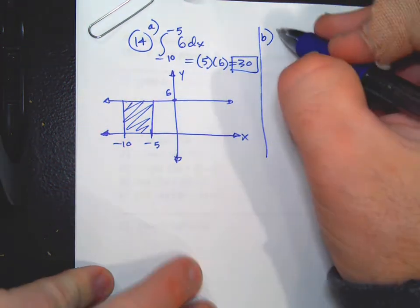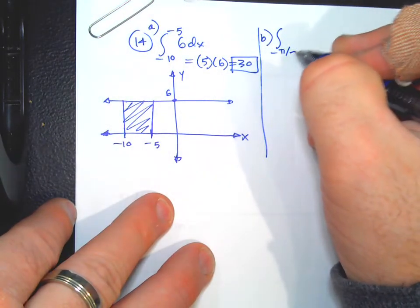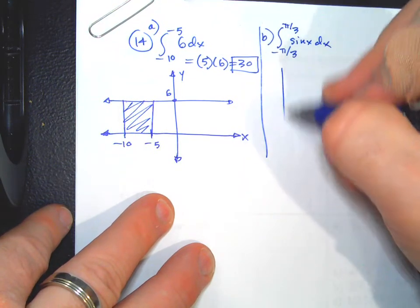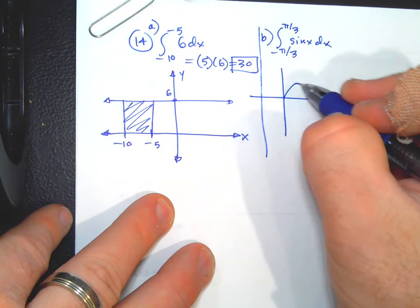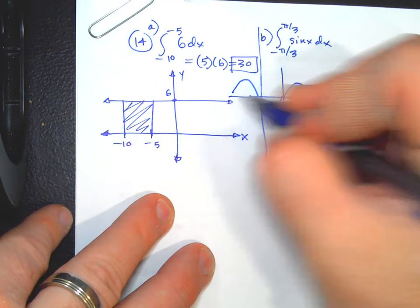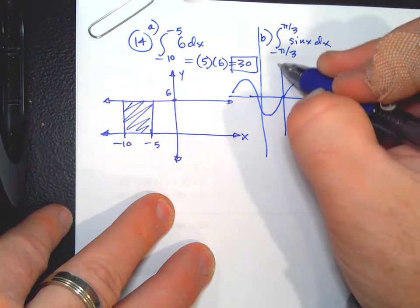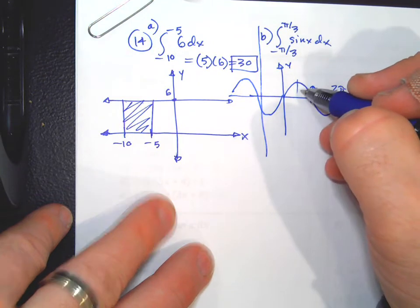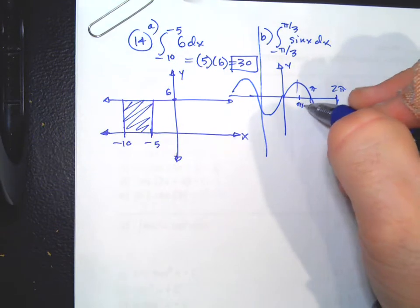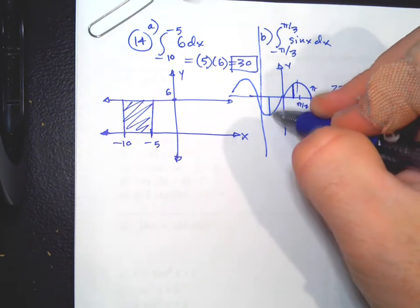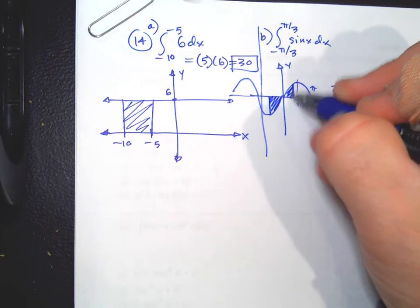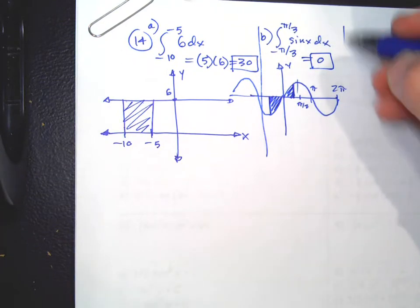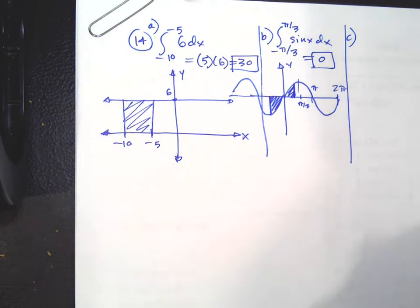Part b: integrate from -π/3 to π/3 of sin(x) dx. The sine curve from -π/3 to 0 is negative, and from 0 to π/3 is positive — the two regions are equal in size. One's positive and one's negative, so they cancel. The answer is zero.